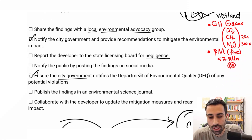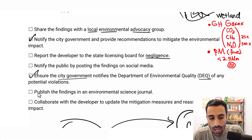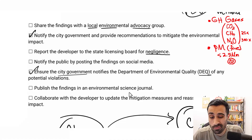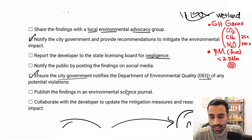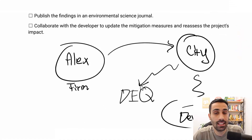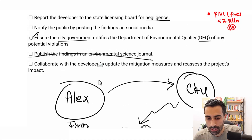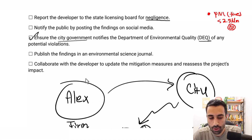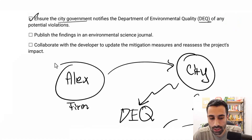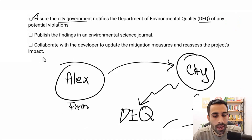Option F: Publish the findings in an environmental science journal. No — again, confidential information exists among the three parties: Alex, city, and developer. We would not publish that in a science journal.